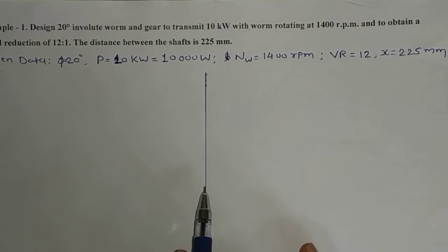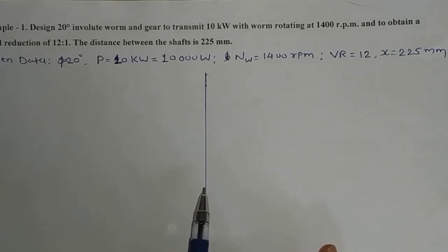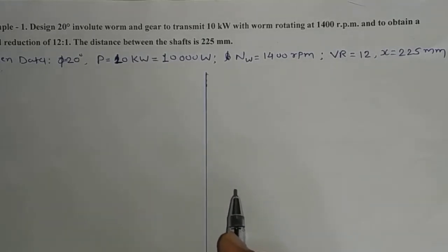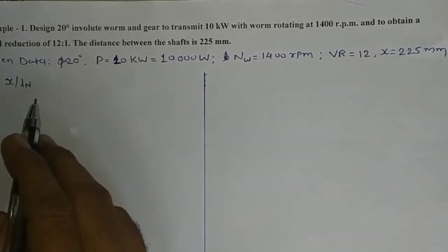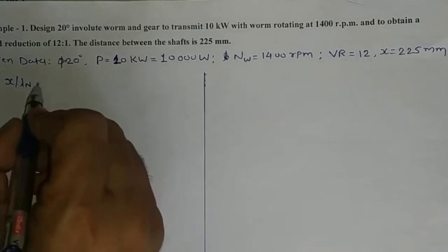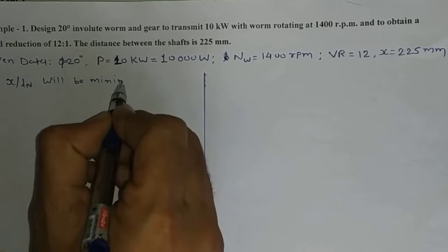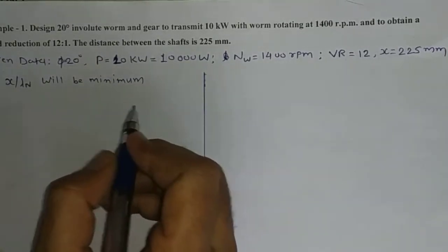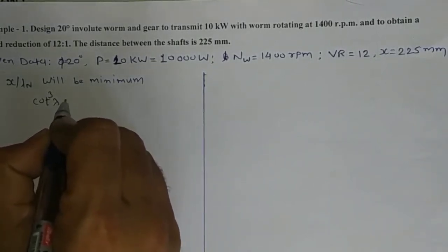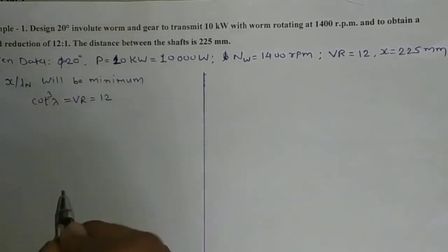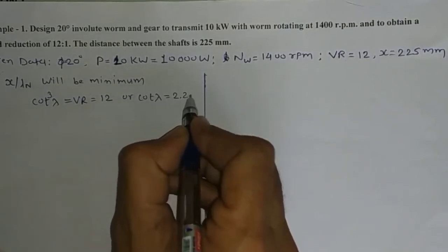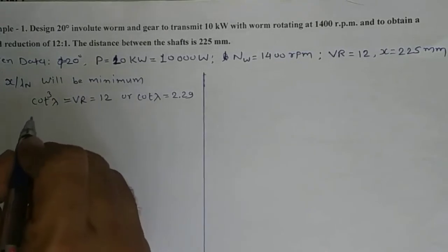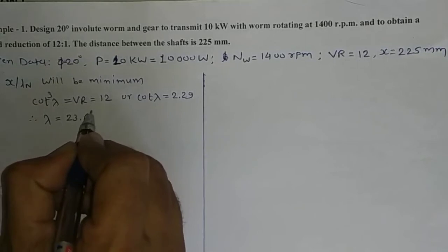We know that the value of x/L_n will be minimum corresponding to cot³λ = VR = 12. Taking the cube root of 12 gives cot λ = 2.29, so the lead angle λ = 23.6 degrees.